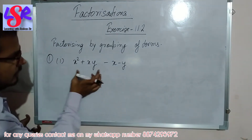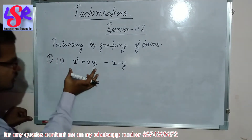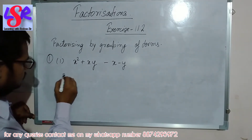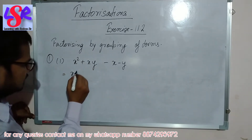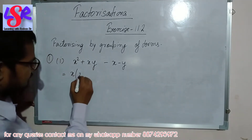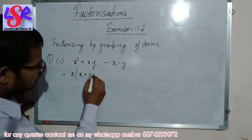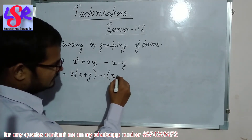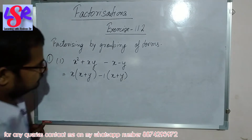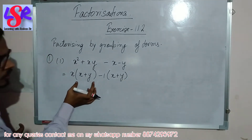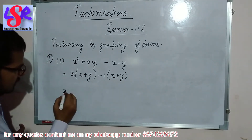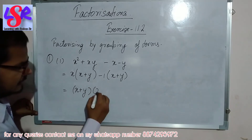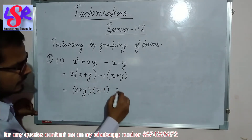First part — here we are having x squared plus xy minus x and minus y. First we are going to take common from the first two terms, then from the last two. From the first two we can take x as common, leaving x plus y. From the last two we take minus 1 as common, leaving x plus y. Both brackets are the same, so we take x plus y as common and get (x plus y)(x minus y) as the answer.